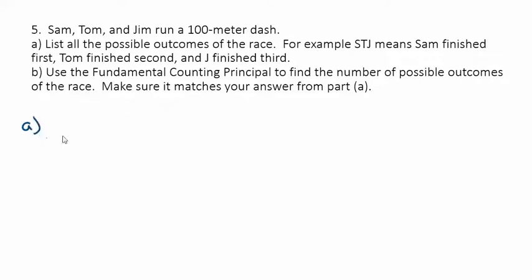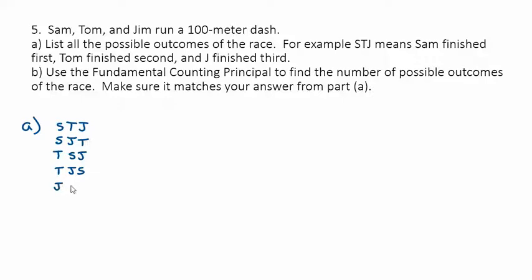Let's try to do this without a tree diagram. If Sam finishes first, then Tom could finish second and Jim third. Or Sam could finish first, then Jim, then Tom. Tom could finish first, and then Sam and Jim, or Tom first and we could switch those. Then the other possibility for first place would be Jim, leaving Sam and Tom, and then we could switch those — Tom and Sam.